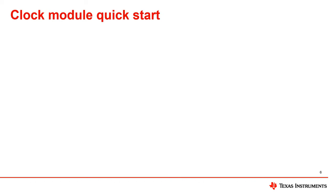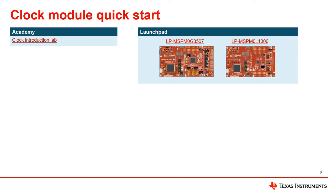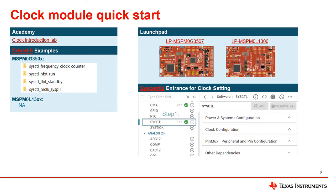After looking at the features of the clock module in the MSPM0, let's look at how to quickly evaluate the clock module. First of all, it is highly recommended that you purchase a LaunchPad for the MSPM0 for easiest evaluation. Next, using the clock module training academy, it will walk you step by step on how to configure the clock module using the MSPM0 LaunchPad. We can also refer directly to the software examples in the MSPM0 SDK. If you want to customize the configuration of the clock module, it is recommended that you use SysConfig graphical configuration to do so. In SysConfig, you can quickly adjust the clock frequencies and parameters, and then compile to generate updated code. SysConfig greatly reduces evaluation development time.